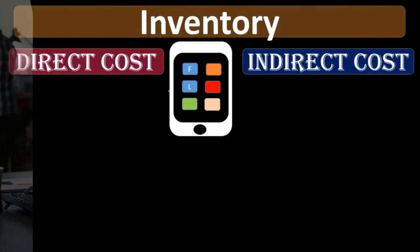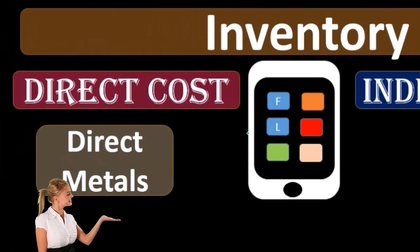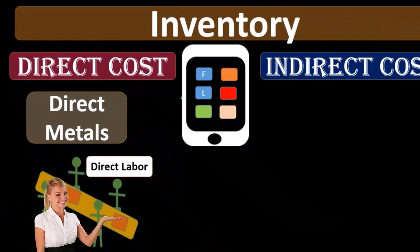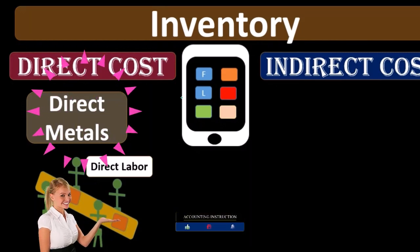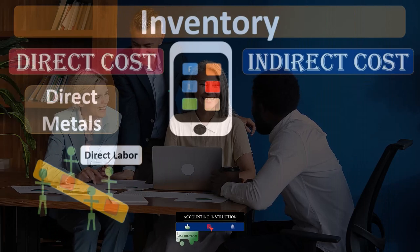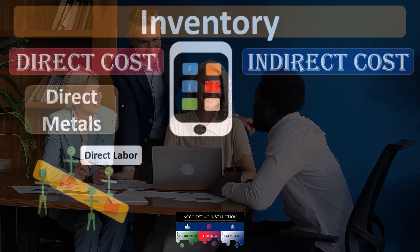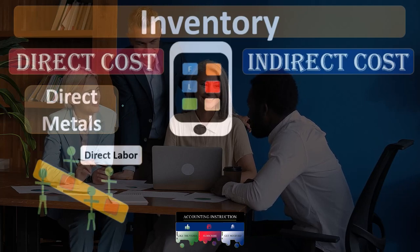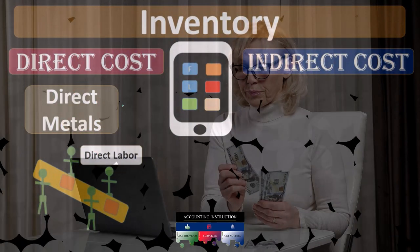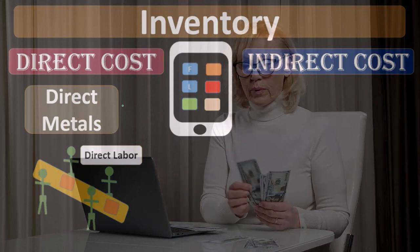The costs that we can apply out directly are going to be the direct costs — things like direct materials and direct labor. Those are things that, if we use a job cost system, we can say these people worked on this particular job, this inventory was used for this particular job, and therefore we can apply it out to that particular piece of inventory. In a process cost system, again, we can apply out the direct materials and the direct labor.